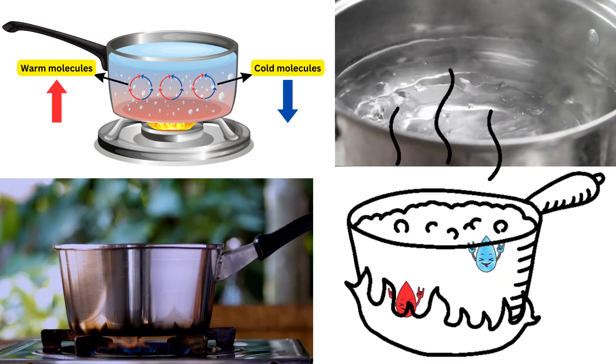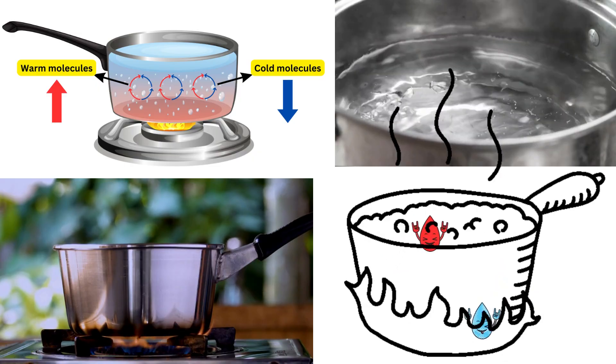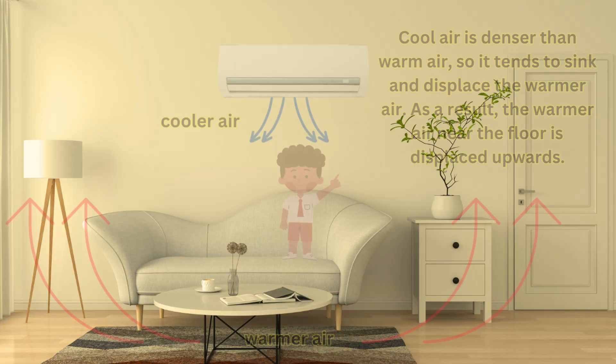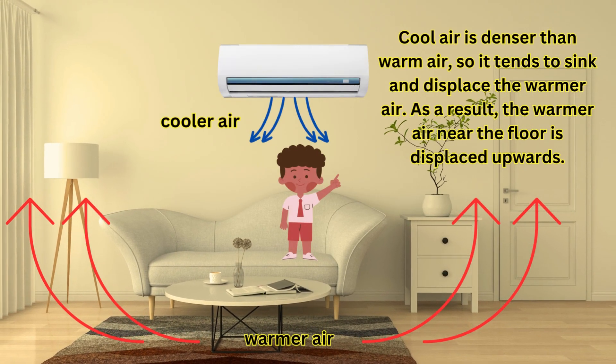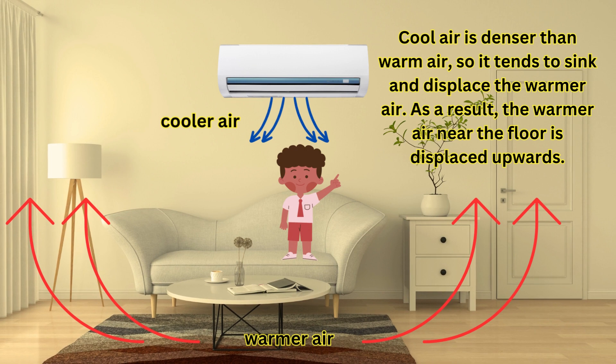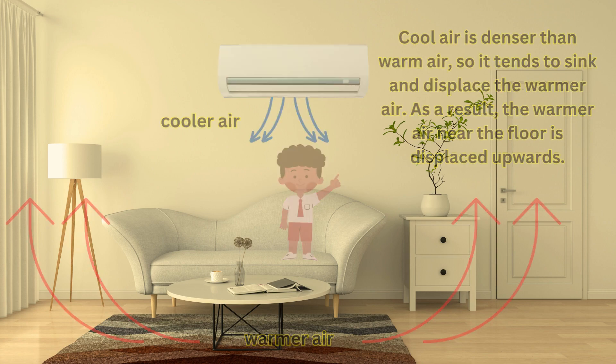This creates a circulation pattern called a convection current. Convection is not limited to liquids — it also occurs in gases. Consider the example of a room with an air conditioning unit. The cold air released by the unit sinks to the floor, displacing the warmer air and cooling the room through convection.